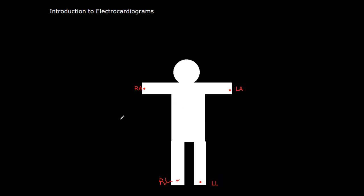And we'll reset and talk about the other ones. Okay so for AVL which is what we'll do here. AVL. It's going to be a composite lead between the right arm and the left leg. And that's going to be negative this time. And that's going to go to the left arm which is positive.